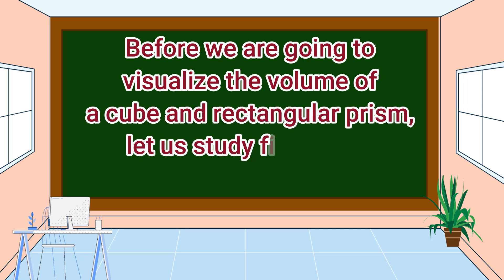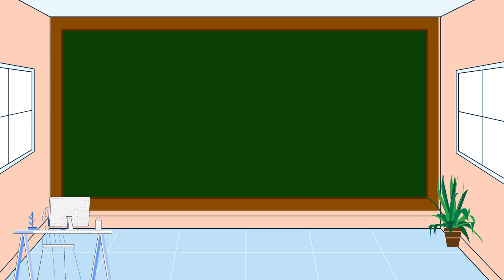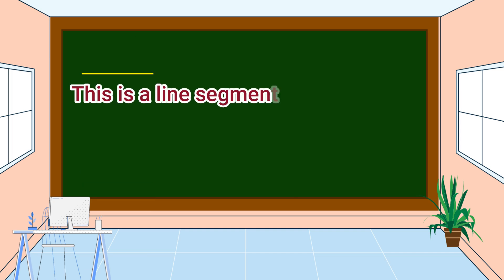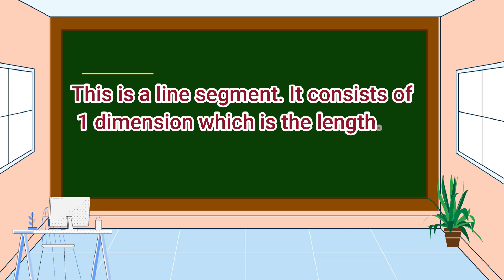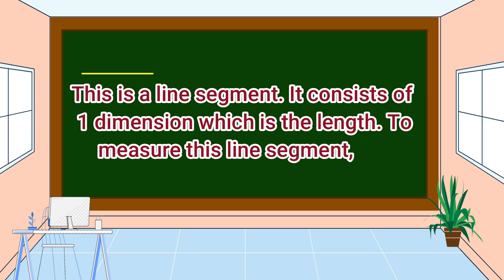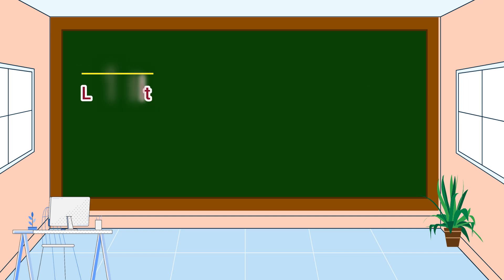This is a line segment. It consists of one dimension, which is the length. To measure this line segment, we measure its length. For example, the length of this line segment is one unit.